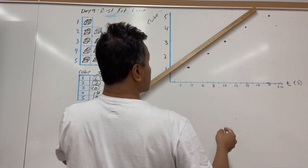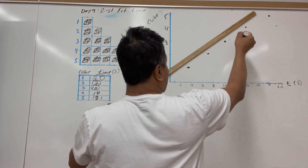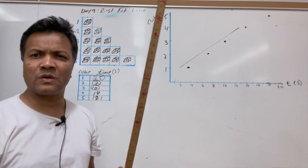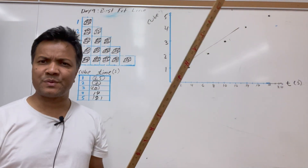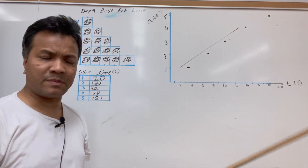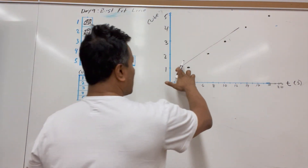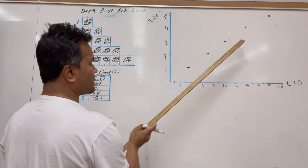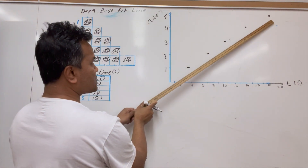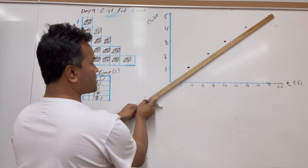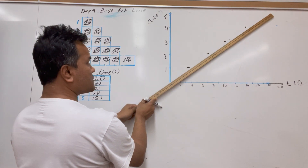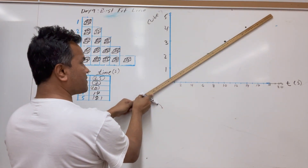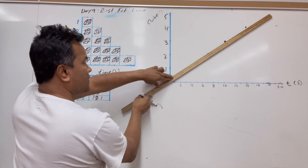It's also not a best-fit line if all the data points are below it. You have to draw a line where fifty percent of the data points are above and fifty percent are below — that would be the best-fit line. Let's see whether we can do that: fifty percent below and fifty percent above.